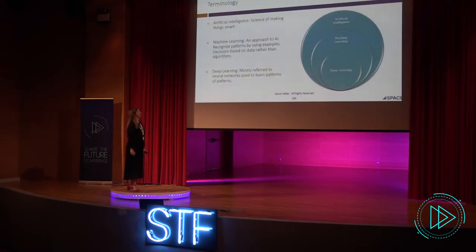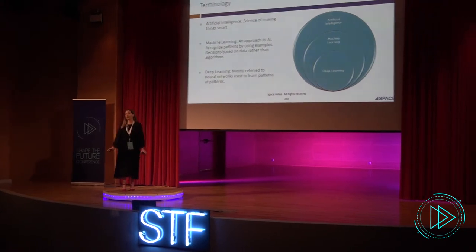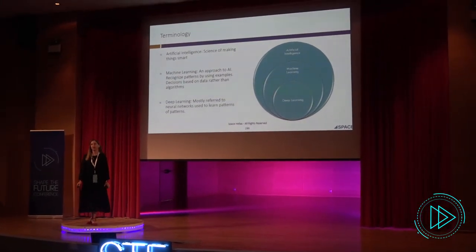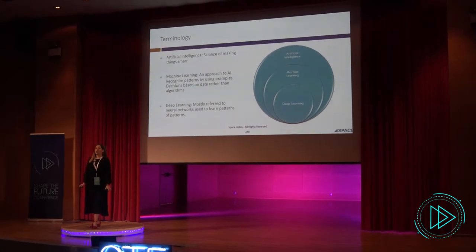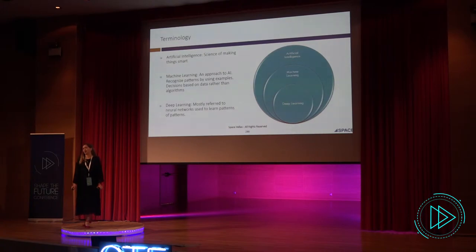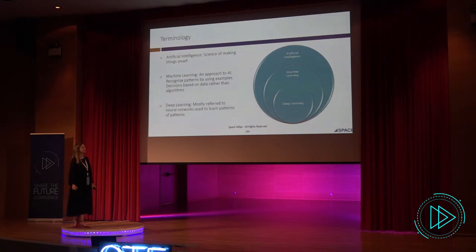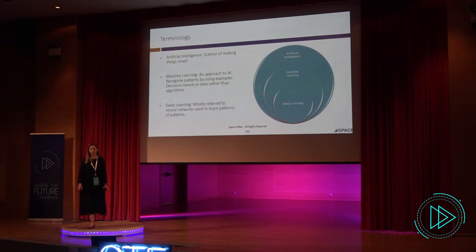Let's talk a little bit about terminology. Artificial intelligence, for us engineers, is the broader set, whereas machine learning is just a branch of AI. For marketeers, machine learning is the same as AI, but for us it's not. Machine learning is just the algorithms that we use to do AI. We also have deep learning, which uses neural networks and tries to learn patterns from patterns.